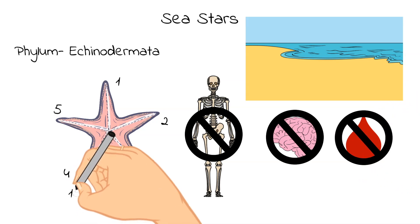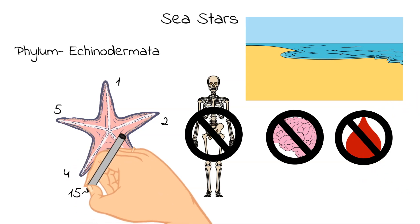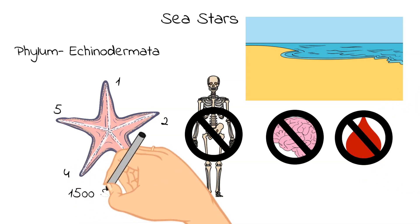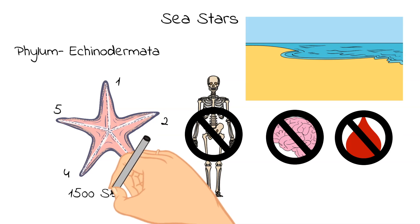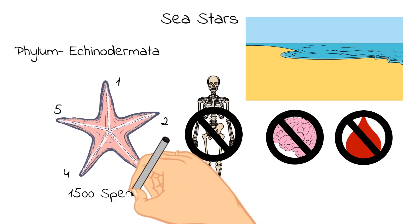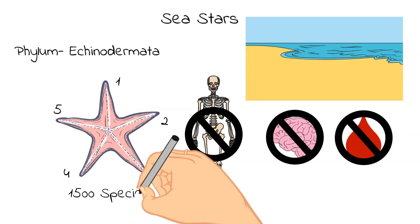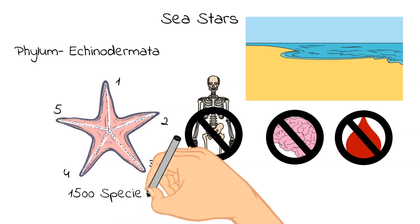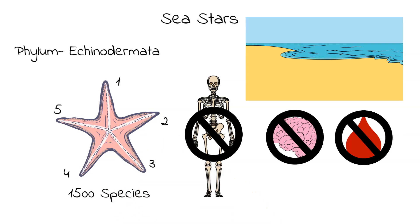There are 1,500 different species of sea star and most are predators. They typically eat mussels, clams, and other types of mollusks.